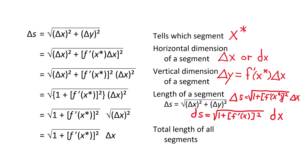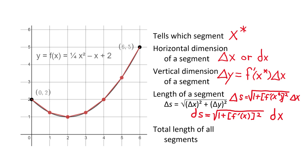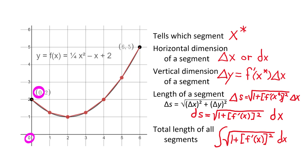Now we have the parts we need to assemble our integral. The length of one short segment is the square root of 1 plus f prime of X squared times DX. To add the lengths of the segments together, we integrate. Our variable of integration is X, so the limits of integration must be values of X. The leftmost short segment has X equals 0, and the rightmost one has X equals 6, so we integrate from 0 to 6. Now that we have set up the integral, we can evaluate it.